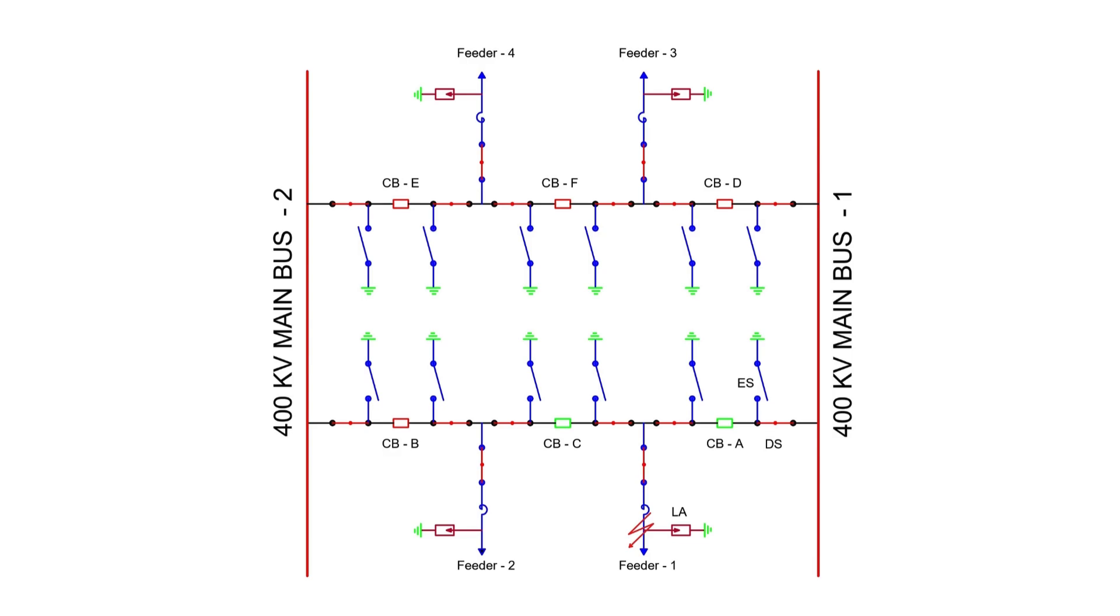Even though circuit breaker A and circuit breaker C are open, feeder two remains in service, powered by bus two. This configuration significantly increases the reliability of the power system.